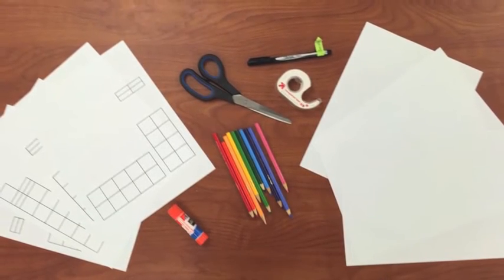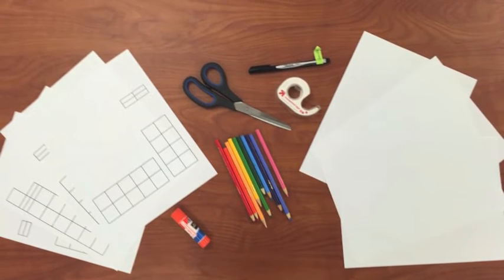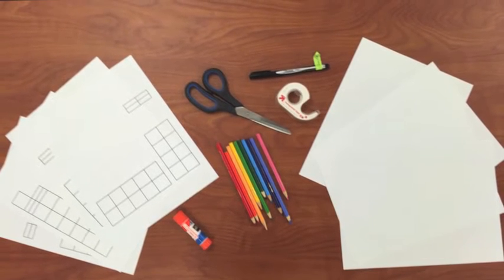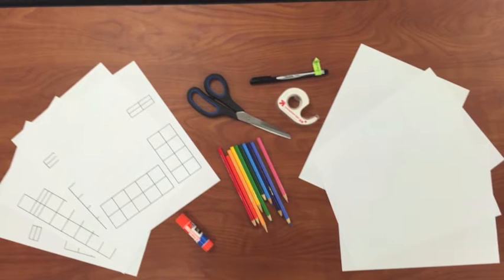So here's what you're going to need to make your own periodic table. Four pieces of white computer paper that you're going to tape together, four pieces of paper that have the copied blocks on them that I gave you in class.